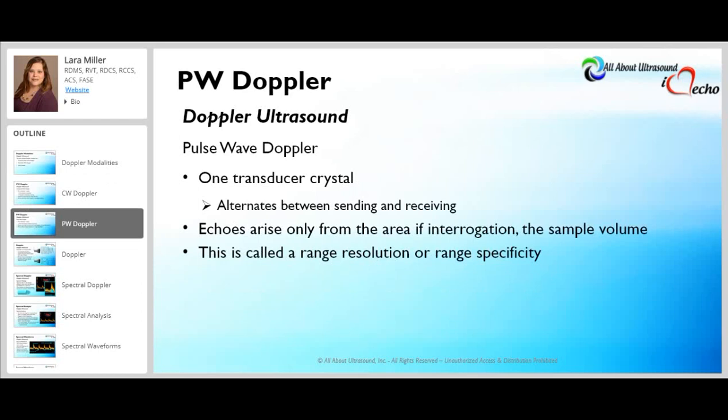With pulsed wave Doppler, it works on one transducer crystal, and so it alternates between sending and receiving. The echoes arise only from the area of interrogation, or the sample volume or sample gate. Because of this, there's range resolution or range specificity, which eliminates the range ambiguity artifact. However, it does display a lower spectrum of velocities, and so aliasing can be an artifact that occurs with pulsed wave Doppler.